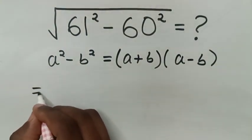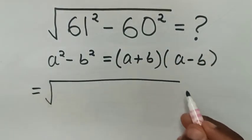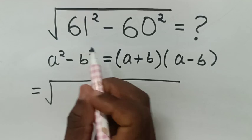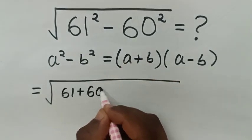Then, it will be equal to, in here there is square root. So, square root of a plus b, it will be 61 plus 60. So, 61 plus 60.